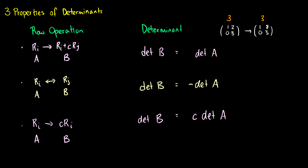This makes sense in this example. If we have [1, 2; 2, 1], the determinant is 1 minus 4, which is negative 3. But if we flip the rows to get [2, 1; 1, 2], we get 2 times 2 minus 1 times 1, which is 4 minus 1 equals 3. So the determinant becomes positive 3 — the negative of the original.